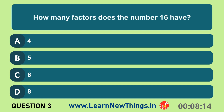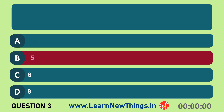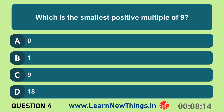How many factors does the number sixteen have? Five. Which is the smallest positive multiple of nine? Nine.